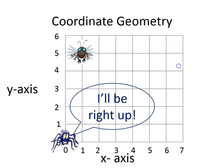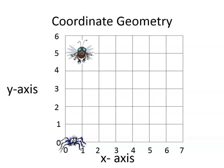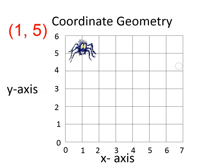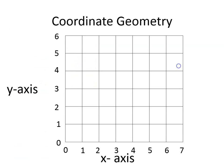The spider says 'I'll be right up,' moves to the right, then comes up, and he's at one comma five.